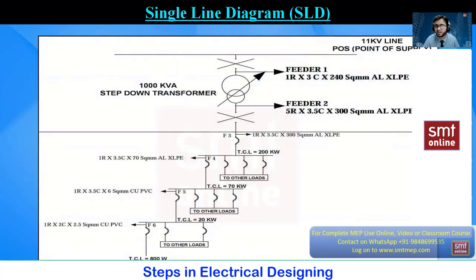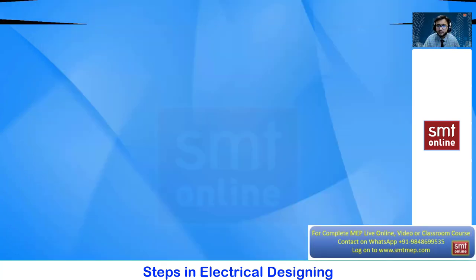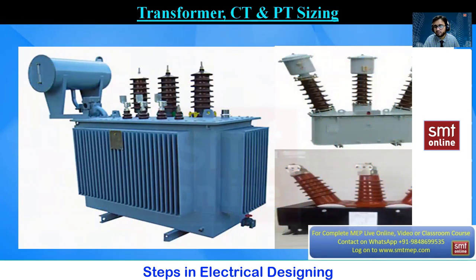A sample single line diagram with six feeders is shown. Feeder one is the point of supply, feeder two is the secondary side. For 200 kW of load, a 300 sq mm cable is proposed; for 70 kW, a 70 sq mm cable; for 20 kW, a 6 sq mm cable; and for 800 W on feeder six, a 2.5 sq mm cable. The single line diagram gives a complete outline and scope of the project.